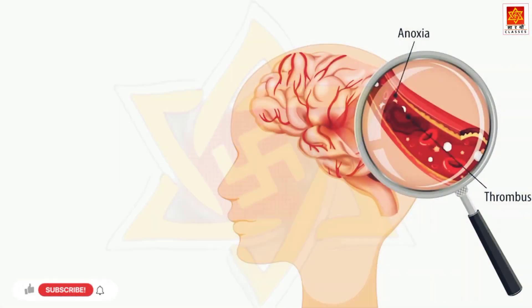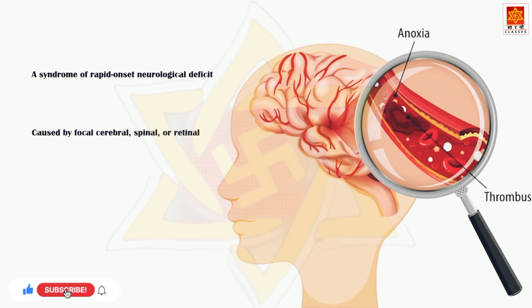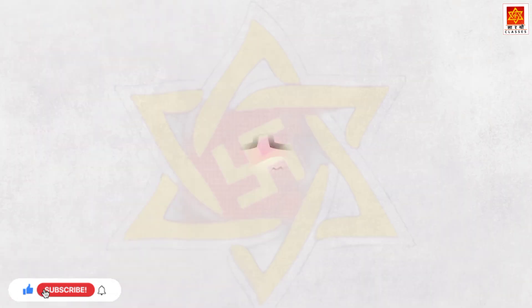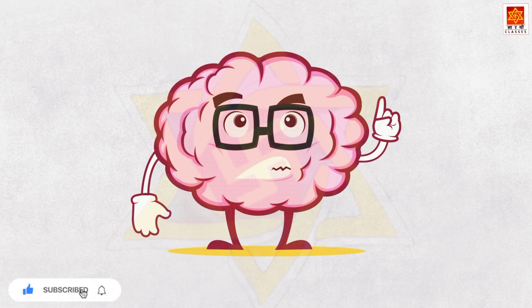Stroke is defined as a syndrome of rapid onset neurological deficit caused by focal cerebral, spinal, or retinal infarction or hemorrhage. It is a serious life-threatening medical condition which happens when the blood supply to a part of the brain is cut off. Like all other organs, the brain also needs oxygen and nutrients to maintain its normal functions. Therefore, if the blood supply to the brain is compromised, brain cells begin to die.